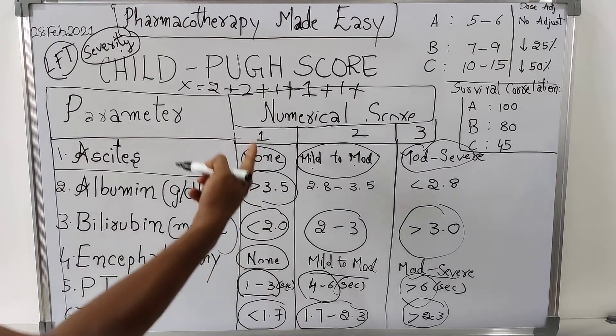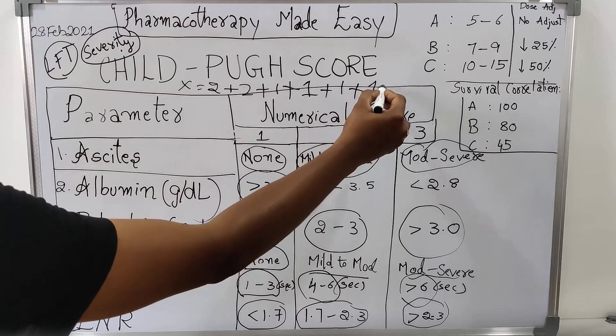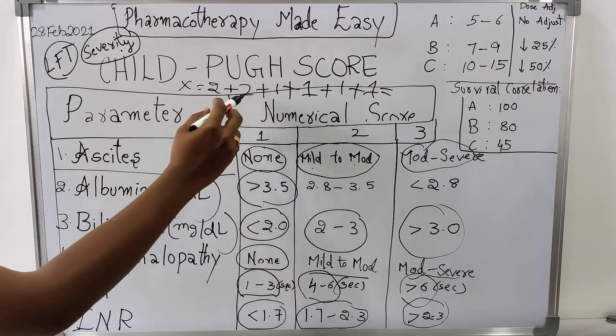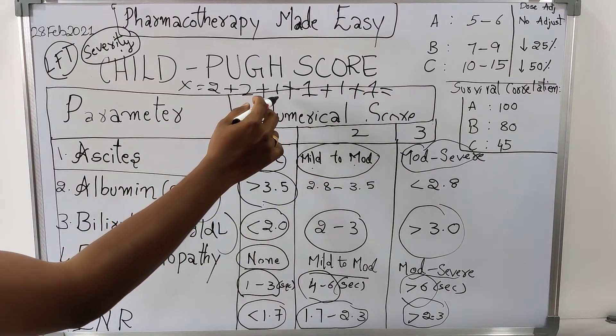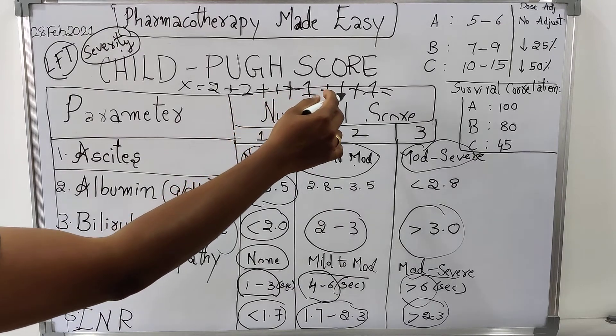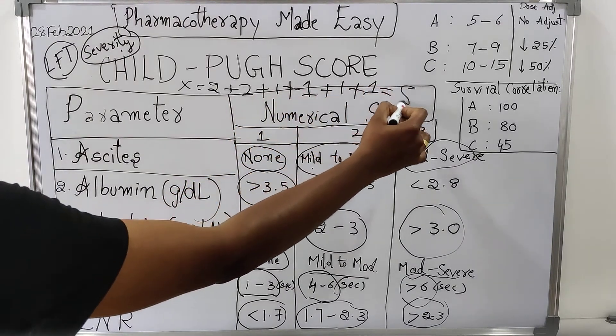INR, if it is less than 1.7, the score will be 1. So if we sum up all these scores: 2 plus 2 is 4, 4 plus 1 is 5, 5 plus 1 is 6, 6 plus 1 is 7, 7 plus 1 is 8. The score is 8.